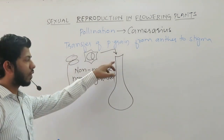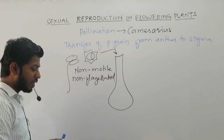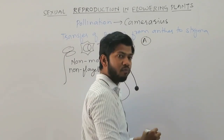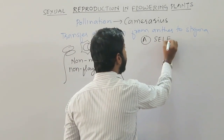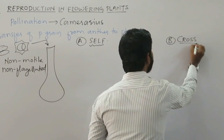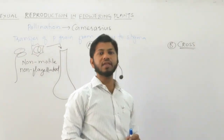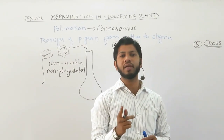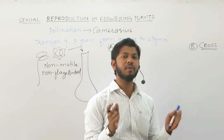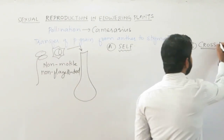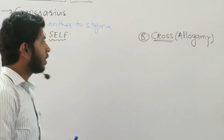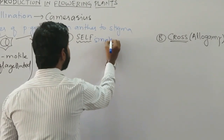This process of transfer is known as pollination. Pollination is mainly classified into two types. The first type is known as self-pollination, where only a single plant body is involved. The other type is cross-pollination, which involves two different plant bodies. Cross-pollination is also known as allogamy.